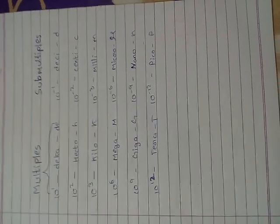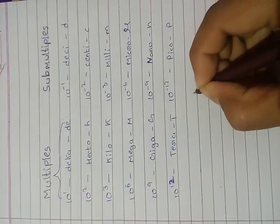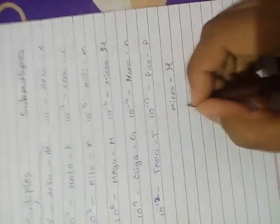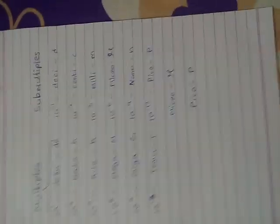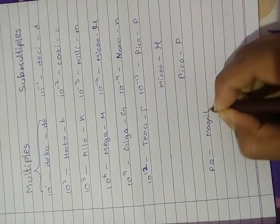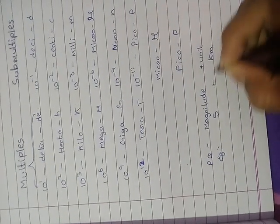This is capital P. Don't forget, you need to remember in this sub-multiples. Physical quantity is equal to magnitude plus unit. Example: five kilometers.